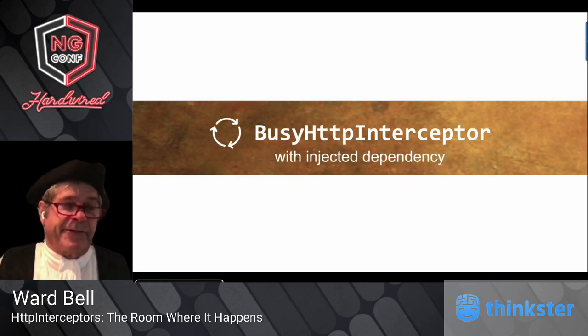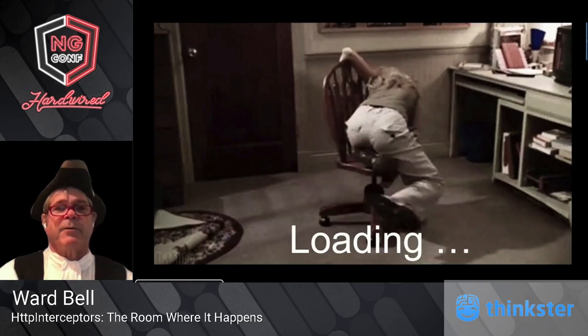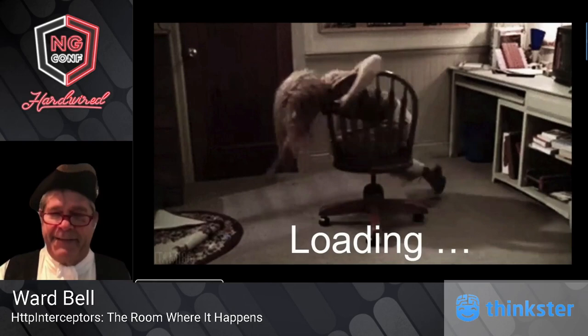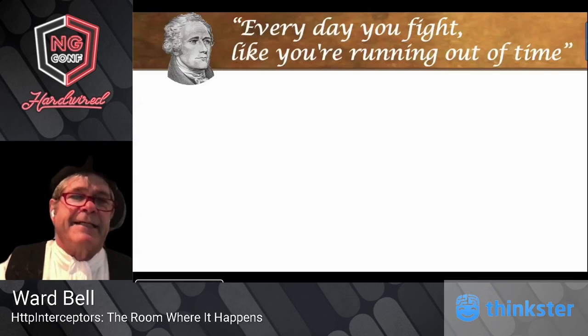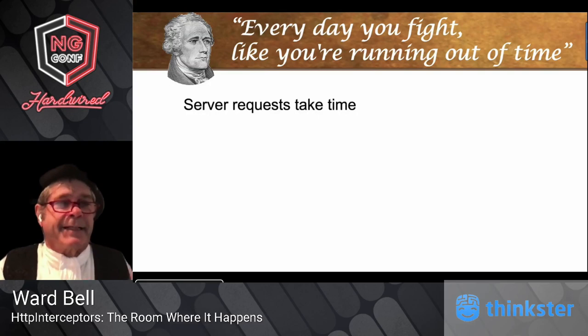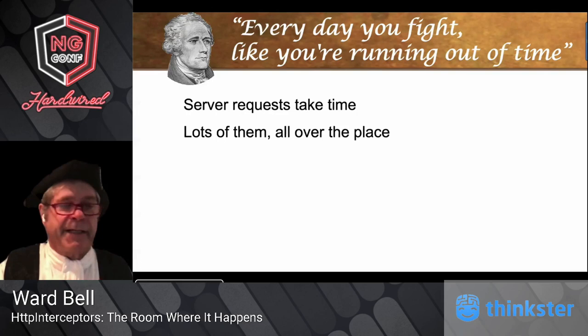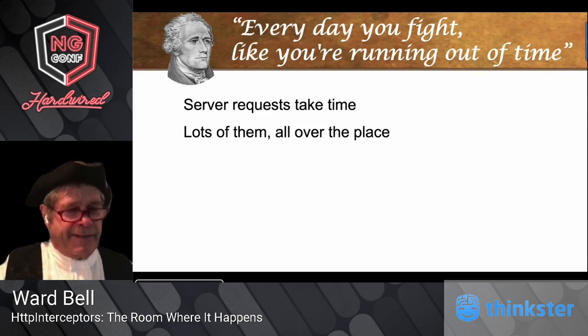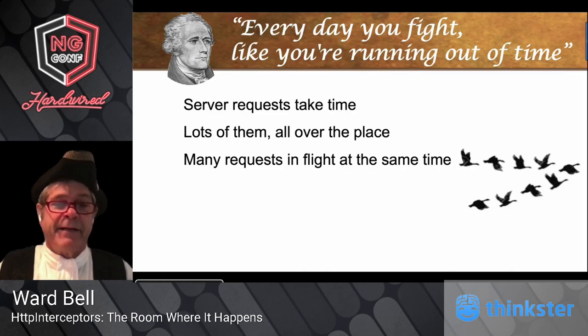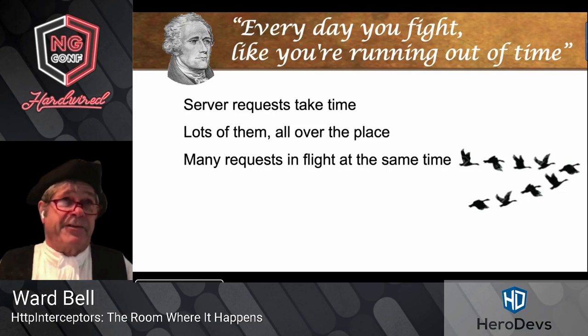Like any service, an interceptor can take injected dependencies. For example, sometimes things take a long time to load and you need a spinner — some kind of busy indicator. But we realize we've got all these requests throughout our application flying in from everywhere, and you don't want to hook each one of them up to a busy indicator individually. You'd like a centralized place to do it. When you do that, you realize you may have many requests launched all at once or in sequence, so you can't just turn it on — you have to keep track.